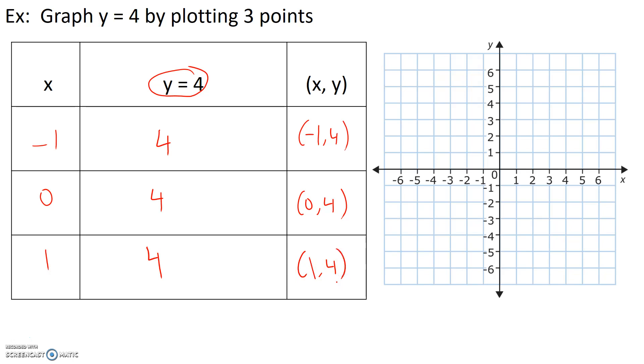Now if we had picked 3, 5, and 7, same thing. The value of y will always be constant at y equals 4.